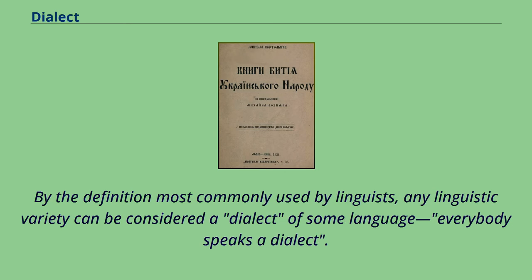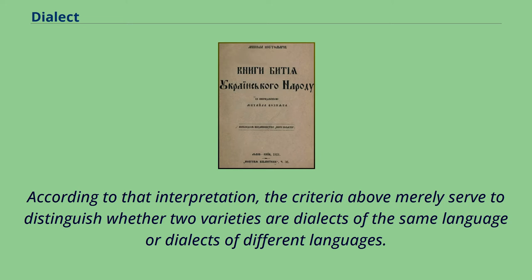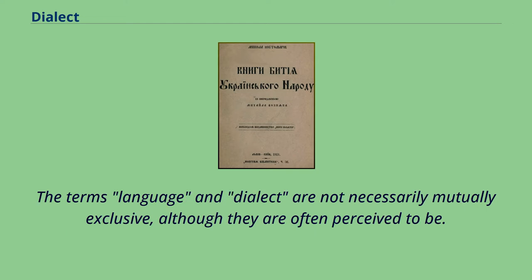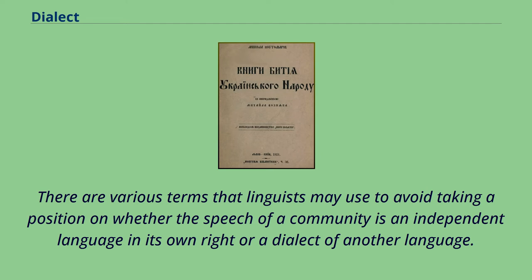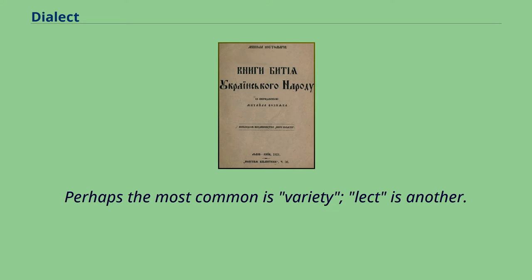By the definition most commonly used by linguists, any linguistic variety can be considered a dialect of some language — everybody speaks a dialect. According to that interpretation, the criteria above merely serve to distinguish whether two varieties are dialects of the same language or dialects of different languages. The terms language and dialect are not necessarily mutually exclusive, although they are often perceived to be. Thus there is nothing contradictory in the statement 'the language of the Pennsylvania Dutch is a dialect of German.'